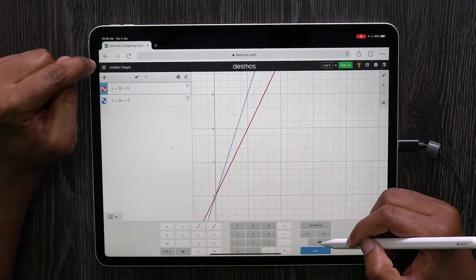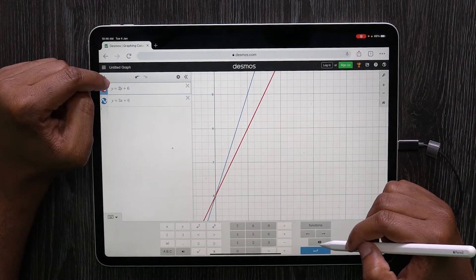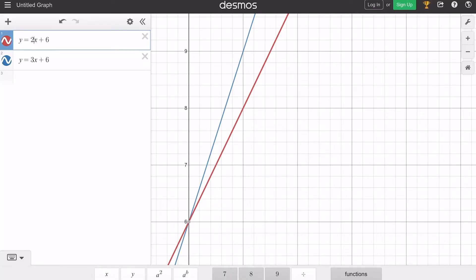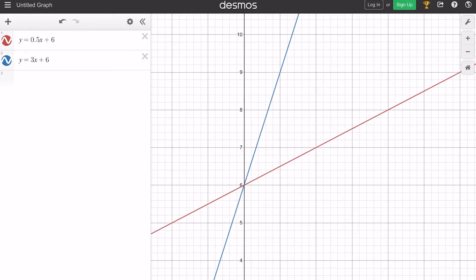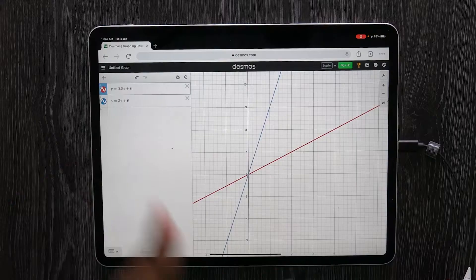If we fiddle with it a little more, let's maybe change the 2 to, how about a half? 0.5. So that's a really small gradient. Here is 0.5. It still has the same y-intercept, but the line is sloping less.